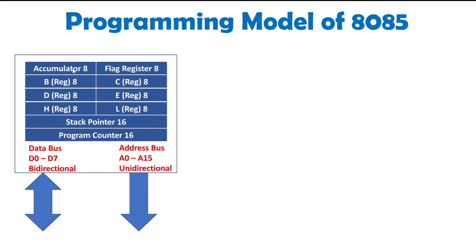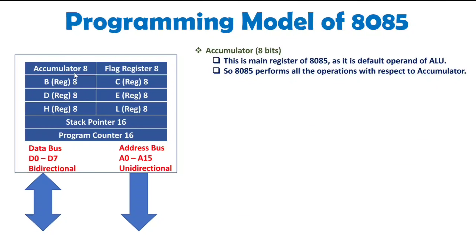The first essential resistor is accumulator. Accumulator is of 8 bits and this is the main resistor of 8085, as it is the default operand of ALU. In architecture also I have told you all the operations of 8085 that will happen with respect to accumulator, as it is the default operand of the arithmetic and logic unit of 8085. So that is referred as A when you do programming and when you write instructions, and the full name is accumulator.